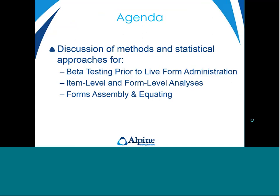On today's agenda, we have three main topics of discussion in terms of methods and statistical approaches, in particular with regards to psychometric analyses. We're going to be covering the most effective and advantageous methods for beta testing of test items and forms prior to live or operational administration of those forms. We'll also be discussing statistical methods to identify poorly performing items and removing them from your item pool.